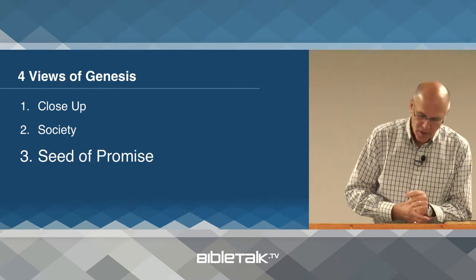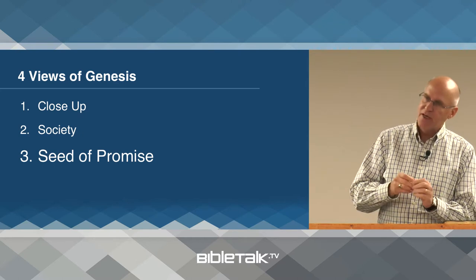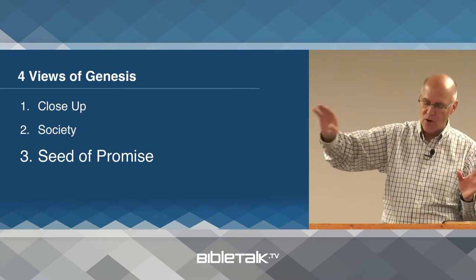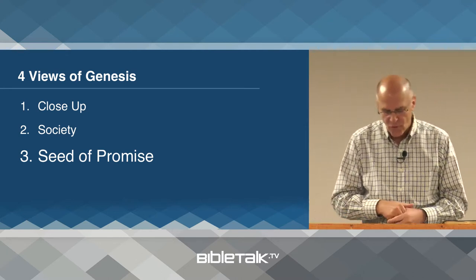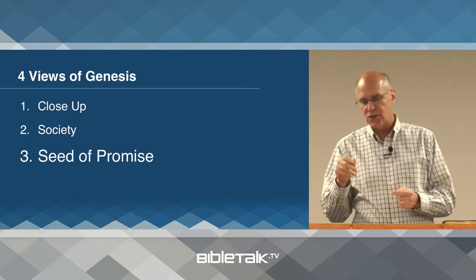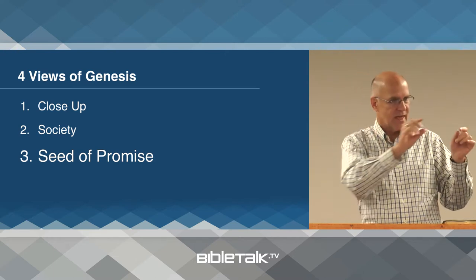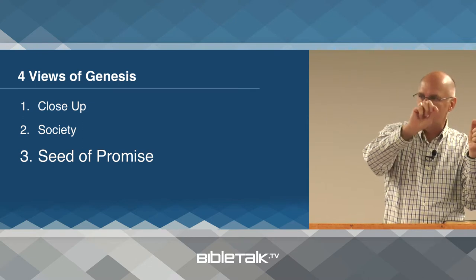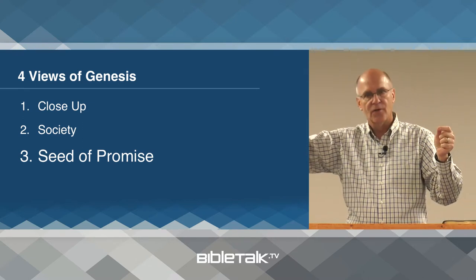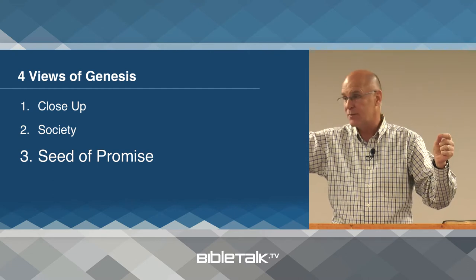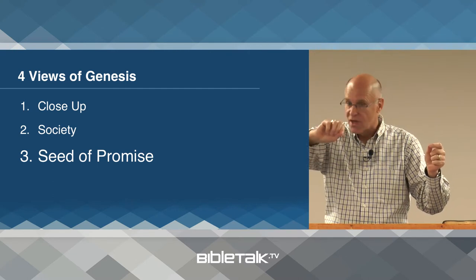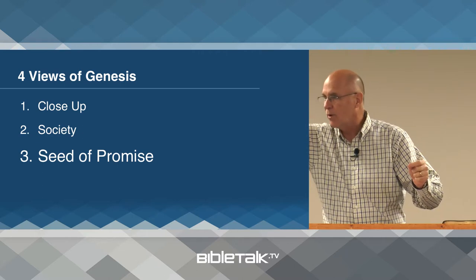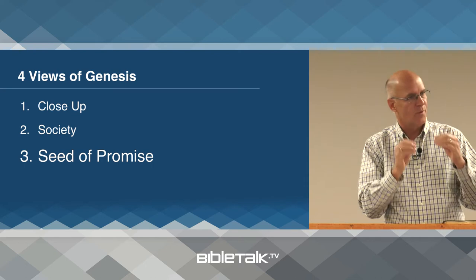Number three is the seed of promise — a long view of God's work in preparing the world for the coming of Christ. The seed of promise is like a golden thread that begins at the beginning of Genesis and keeps working its way through the entire book of Genesis, and continues through Exodus, Leviticus, and all the way through the Old Testament to the New Testament.